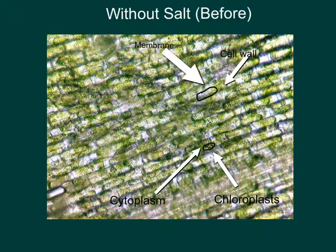We can also observe a cytoplasm. This is a gelatinous substance that is filling the cell and allows flow. We can also see chloroplasts, which are small gametes that help in the product of photosynthesis, which is how plants reproduce.